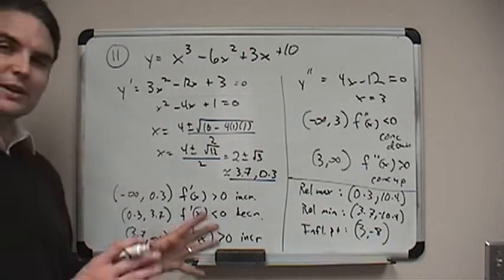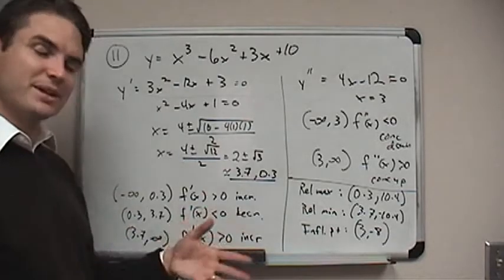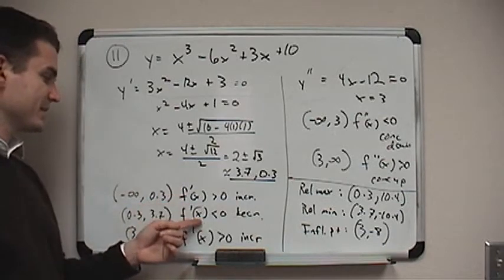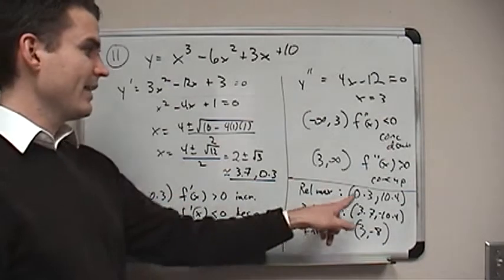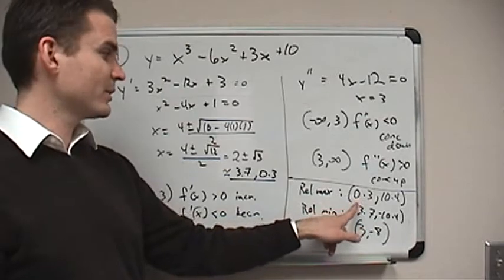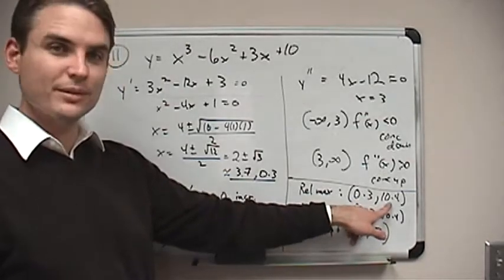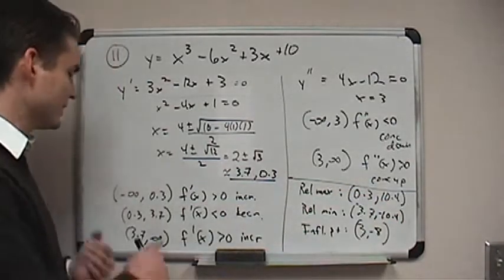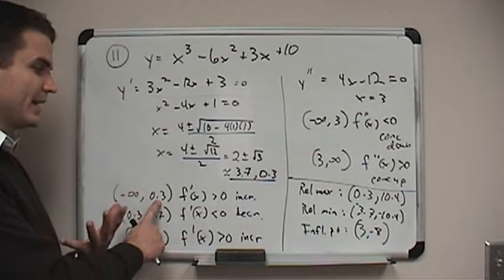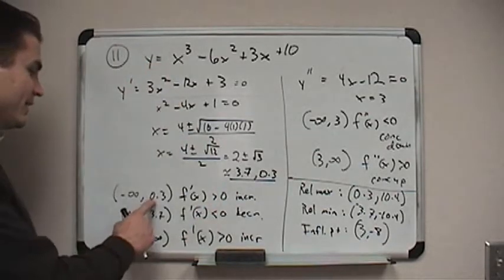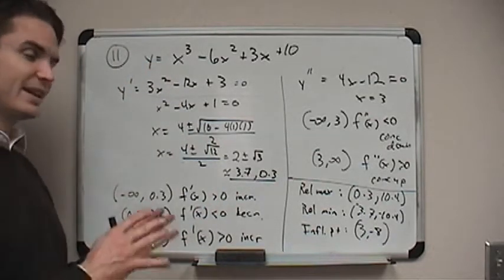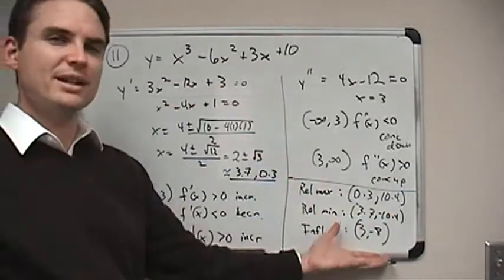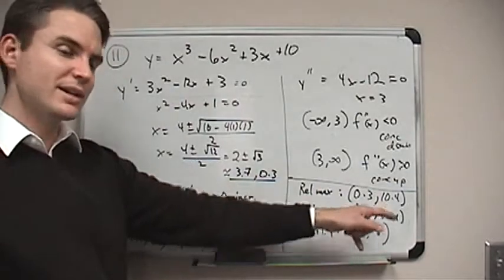So basically, I can actually figure out where the relative minimums and maximums are just based on that. You see, since the derivative changed from increasing to decreasing at the first critical number, that's going to be a relative maximum. So at 0.3 comma f of 0.3, which is 10.4, at that point, I'm going to have a relative maximum. So once I see that the graph has to change from increasing to decreasing, I know that at that number, 0.3, that x-coordinate, that would have a maximum. So if I put 0.3 in for x, I got about 10.4 for y, so that will be a relative maximum.